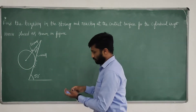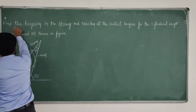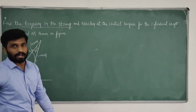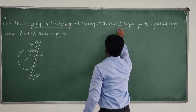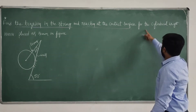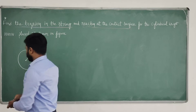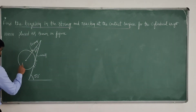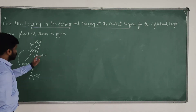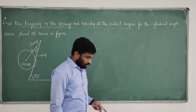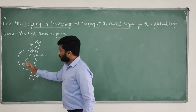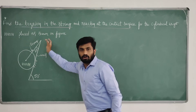Find the tension in the string. You have to compute the tension in the string and the reaction at the contact surface — T and R. We also have to determine the reaction at the contact surface for the cylindrical weight of 1000 Newton, shown in figure. This 1000 Newton sphere is resting on an inclined contact surface and provided by a string.